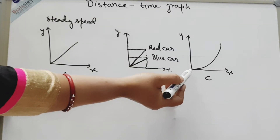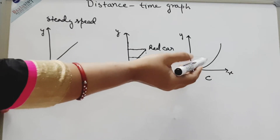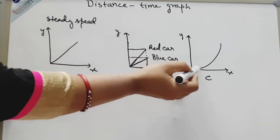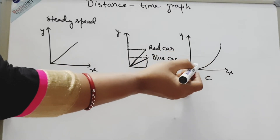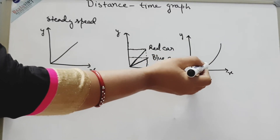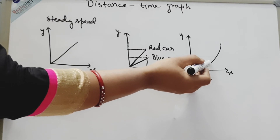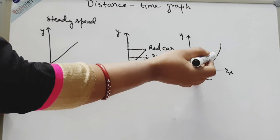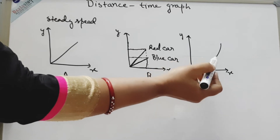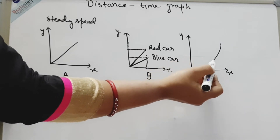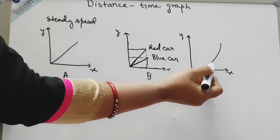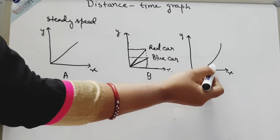This is the third type of graph, which is not a straight line like the other two — it is a curve. At the beginning the speed was slow, but afterwards it increased sharply. So this type of graph is for speeding up, showing that the object is not moving at a constant speed but is speeding up.